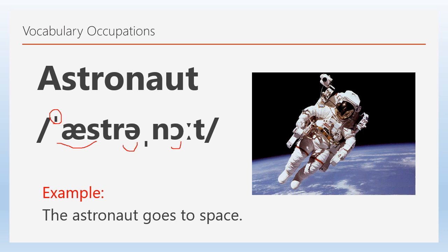I want you to repeat: astronaut. Repeat several times until the word sounds correct. Example: 'The astronaut goes to space.' Let's go to the next word.